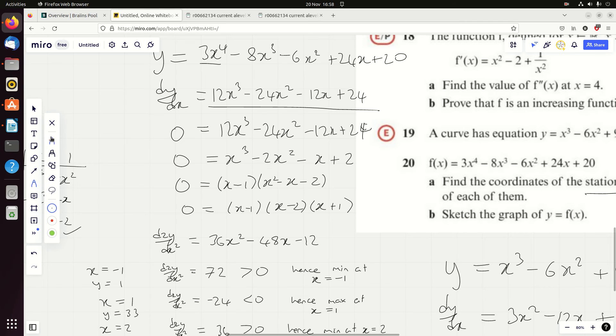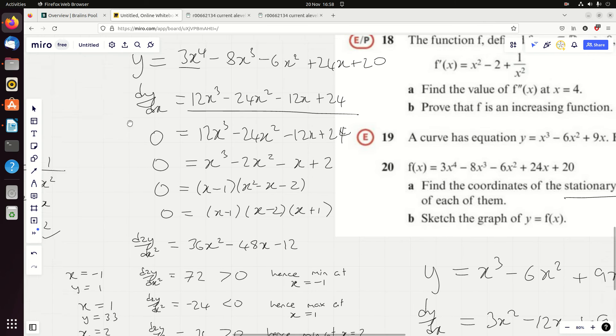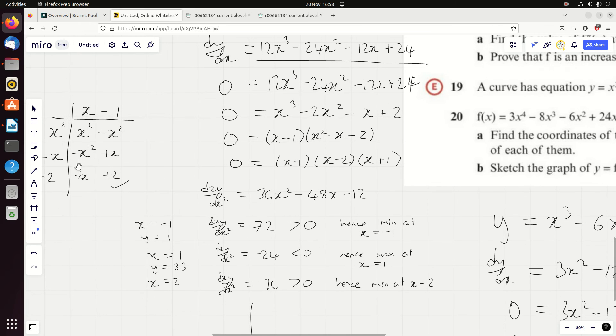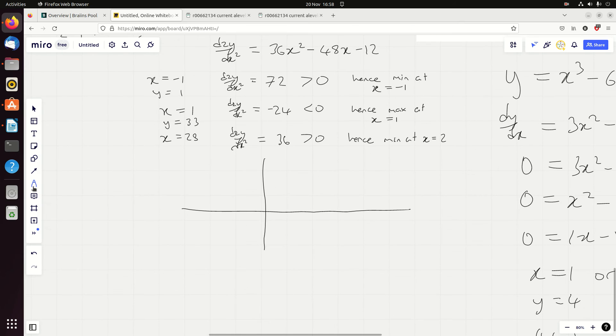And the last one, x is 2, so we're going to have 3 times 16 is 48, minus 64 is minus 16, minus 24 is minus 40, plus 48 is 8, plus 20 is 28. So all the turning points are actually above the x-axis, which is nice. So we know it's going to look something like this: minus 1, 1; 1, 33; and then 2, 28.